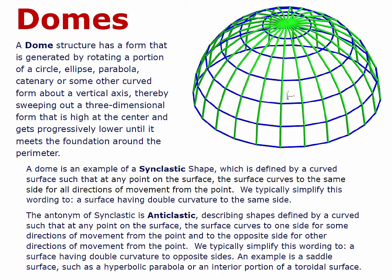The antonym of synclastic is anticlastic, describing shapes defined by a curved surface such that at any point on the surface, the surface curves to one side for some directions of movement from the point and to the opposite side for other directions of movement from the point. We typically simplify this to a surface having double curvature to opposite sides. An example is a saddle surface such as a hyperbolic paraboloid or an interior portion of a toroidal surface.